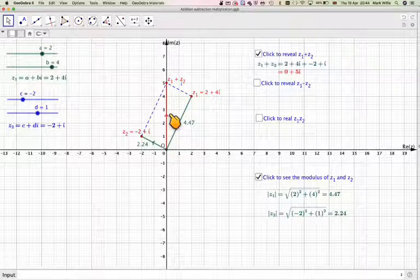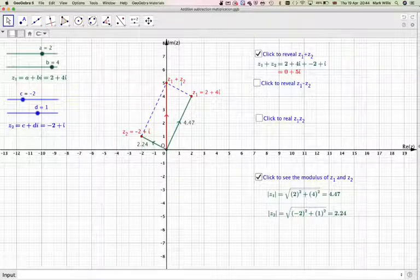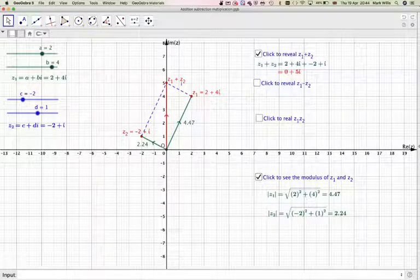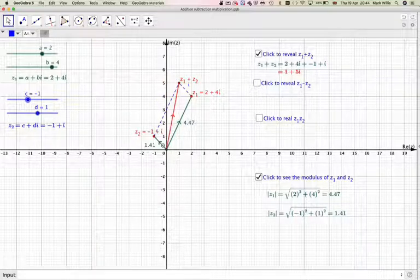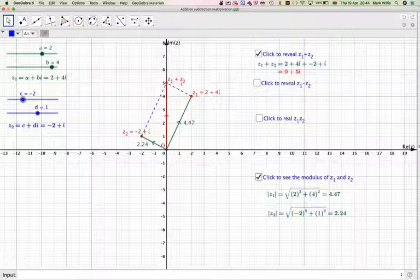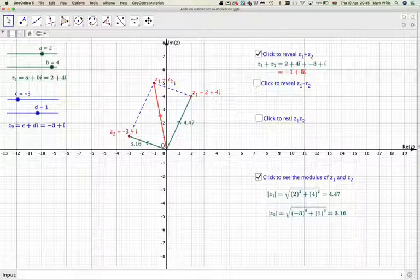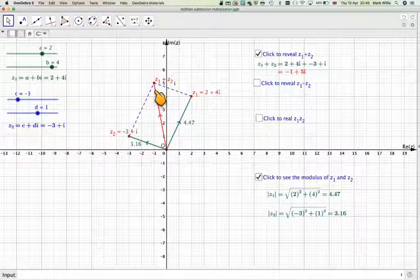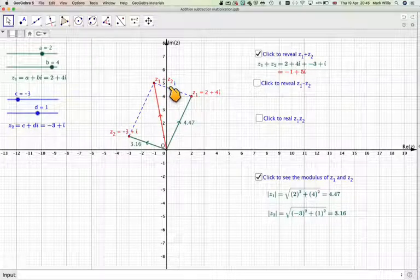So the red line here is how we represent the vector here. So let's just change, let's change C to be minus 3 and then perhaps we can see, there you go.